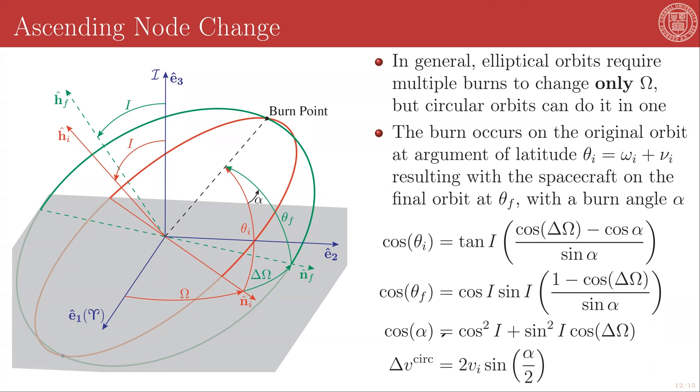And that relationship is given here. Cosine of alpha is going to equal the cosine squared of your inclination plus the sine squared of your inclination, which, remember, this maneuver is leaving unchanged, times the cosine of the change in the longitude of the ascending node.